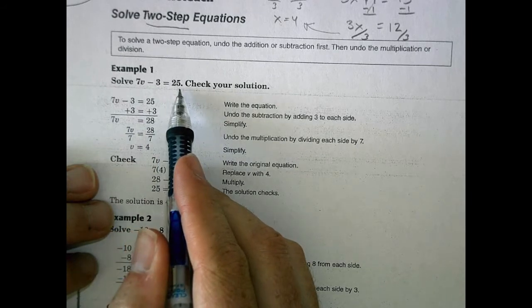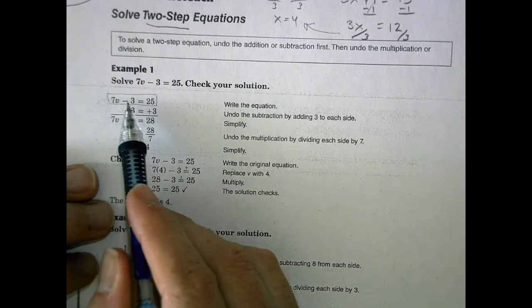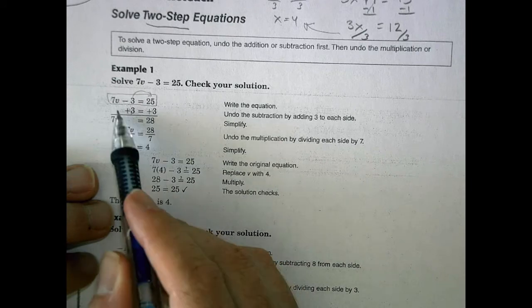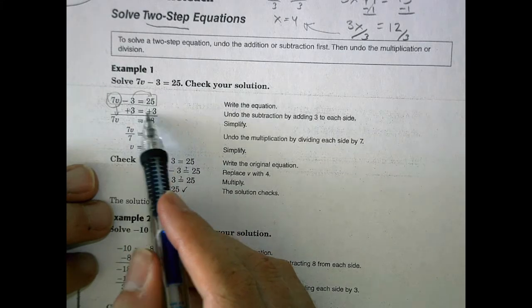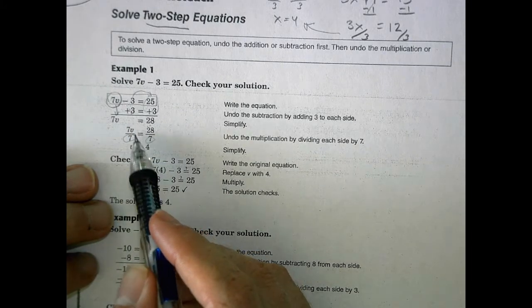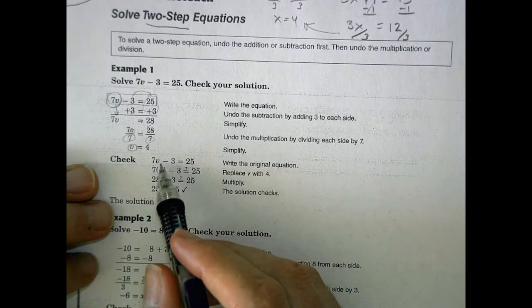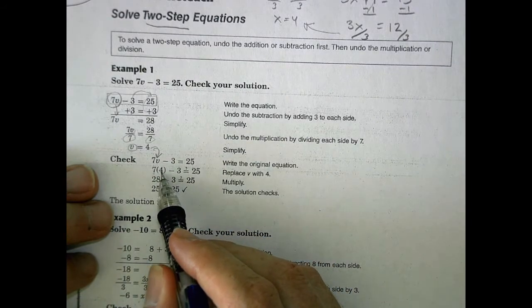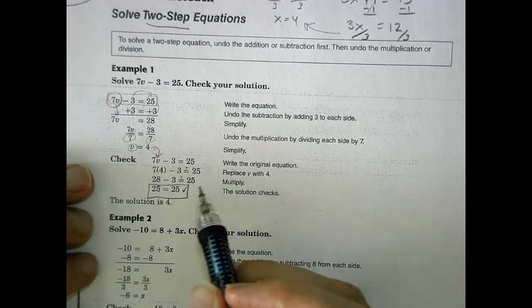We have 7v minus 3 equals 25, so solve it and check your solution. In this case, we would take the initial equation and move the whole number to the other side by adding 3 to both sides. That gets the 7v to stay by itself, so 7v equals 28. At that point, we divide both sides by the coefficient 7 to get the v by itself, and 28 divided by 7 is 4. The way you would check that is take that 4 and plug it back into your equation. 7 times 4 is 28, subtract 3, that's 25, and because we end up with a balanced equation, we know it is correct.